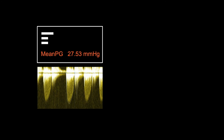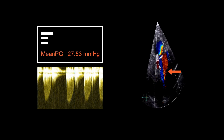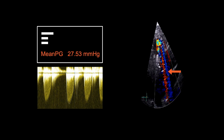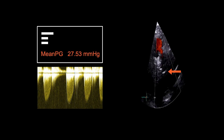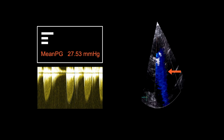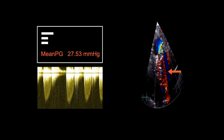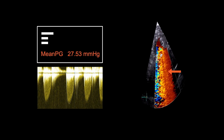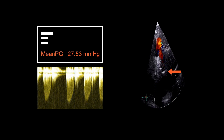His mean pressure gradient was 27.53 mmHg, which suggested severe pulmonic stenosis secondary to endocarditis, and significant pulmonic regurgitation was also observed. Consequently, he was re-referred to the cardiac surgical team for a redo of the pulmonic valve.